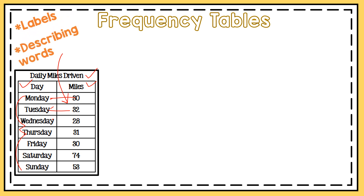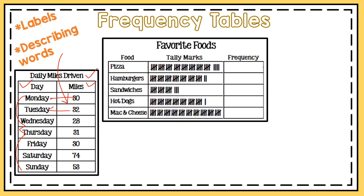It's important when you're looking at frequency tables that you pay attention to the labels and the describing words — they're going to help you read your graph a lot better. Another type of frequency table is a frequency table with tallies.